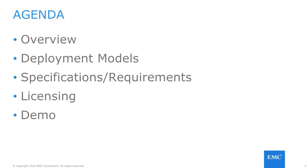Then we'll see the different deployment options for this storage appliance. After that, we'll check out the Unity VSA deployment specifications, including underlying server hardware requirements, before seeing the available licensing options. We'll end with a demonstration on deploying a Unity VSA on top of an ESXi host and using Unisphere to manage the storage appliance.